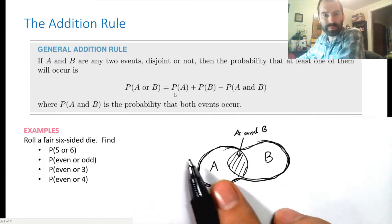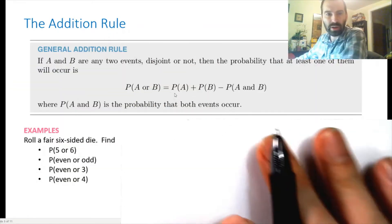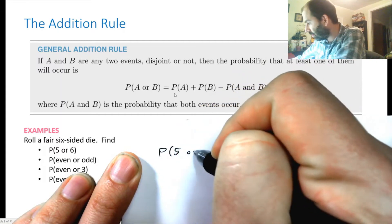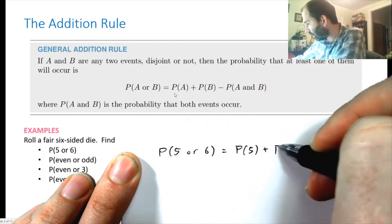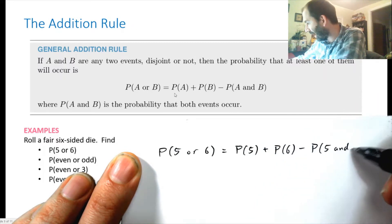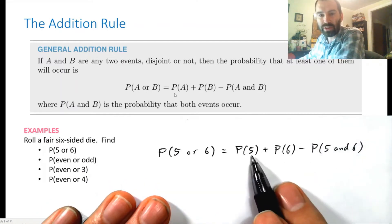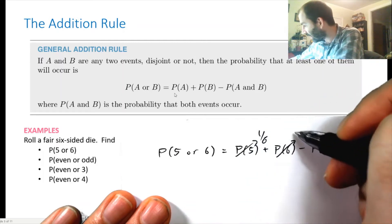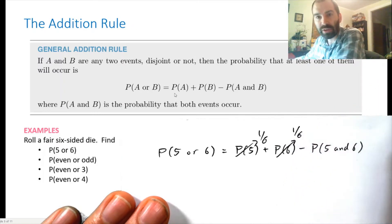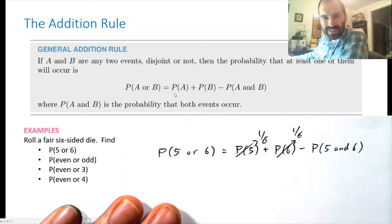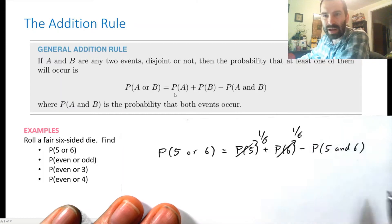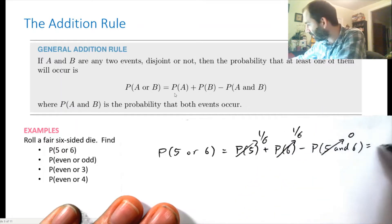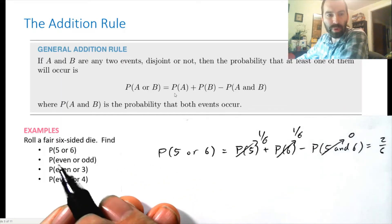Example: roll a fair six-sided die; find the probability of getting a five or six. That's P(5) + P(6) − P(5 and 6) = 1/6 + 1/6 − 0 = 2/6. What about P(even or odd)? That's 1/2 + 1/2 − 0 = 1, which means it's certain to happen — rolling a die must yield either an even or odd number.